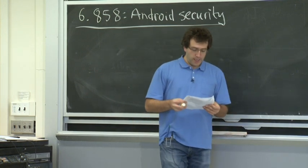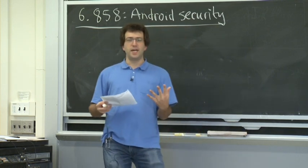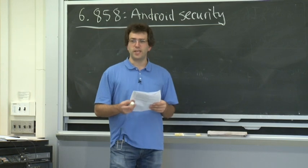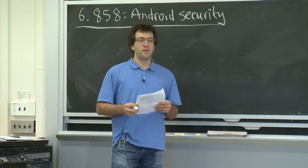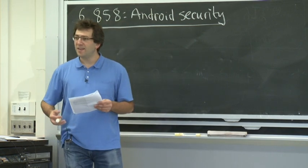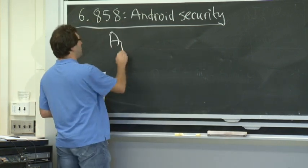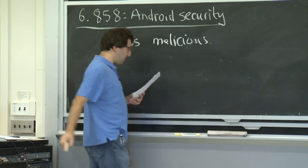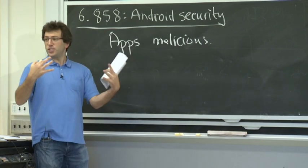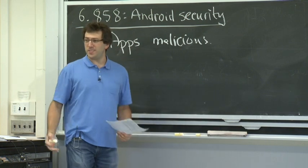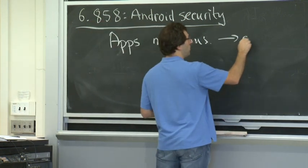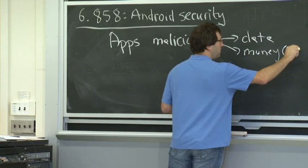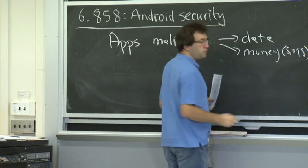Let's start by talking about the threat model — what are these guys worried about on a phone? There are applications that are going to do malicious things. There are outright malicious applications that are just out to get you, maybe steal your private data. Things you might worry about include data theft, things that might cost money like sending an SMS message or making a phone call, or using the internet.